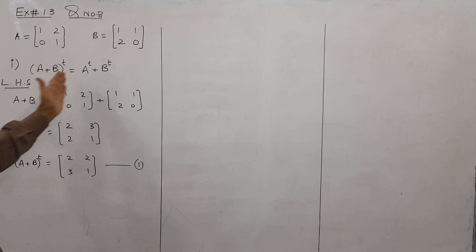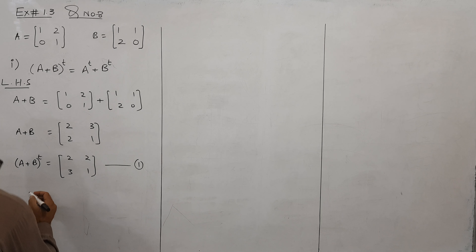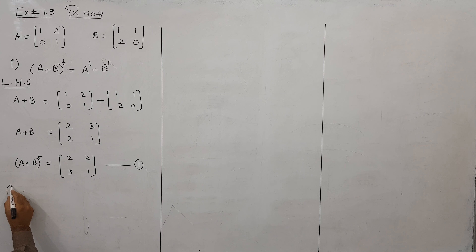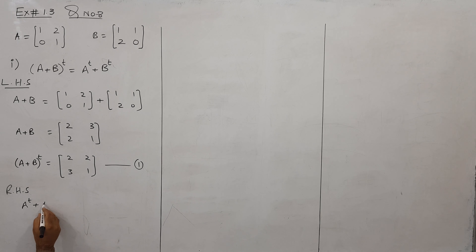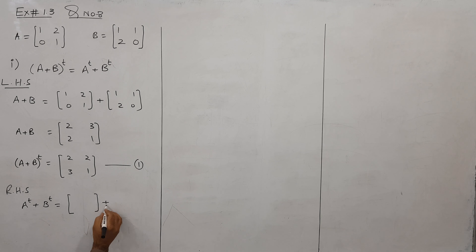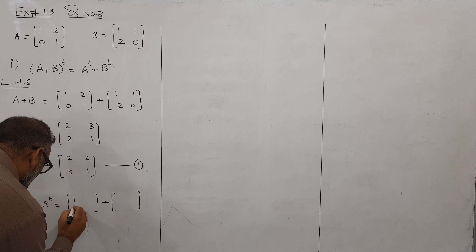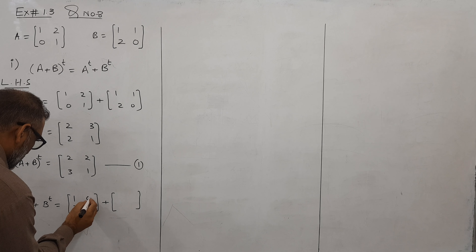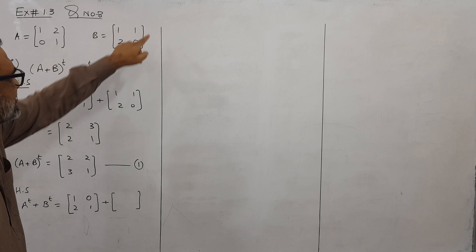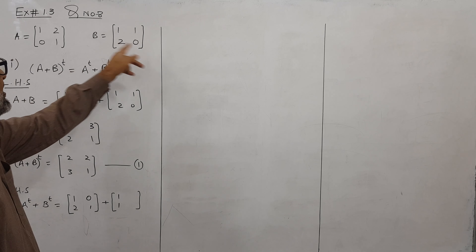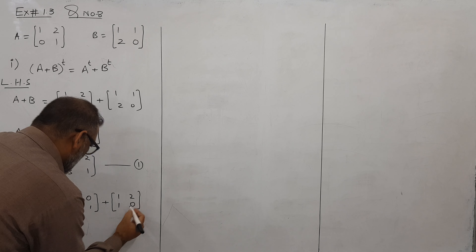اب left hand side complete ہوگی۔ اب right hand side کرتے ہیں — پہلے A کا transpose لیتے ہیں اور plus لکھ لیں۔ Right hand side پر پہلے میں A کا transpose دکھا لیتا ہوں اور پھر B کا transpose، اور دونوں کو add کر لیتے ہیں۔ A کا transpose: پہلی row پہلا column بن جائے گا، دوسری row دوسرا column بن جائے گا۔ اسی طرح B transpose: first row first column، second row second column بن جائے گا۔